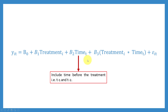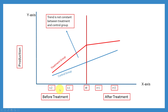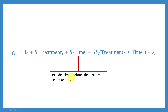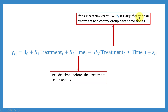Statistically, we ignore the after-treatment time period and create a binary variable for two pre-treatment time periods: T-1 and T-2. We need at least two pre-treatment time periods for this test. If we run the interaction and the coefficient β3 is insignificant, that means the treatment and control groups had the same slope before treatment — and that satisfies the parallel trend assumption.